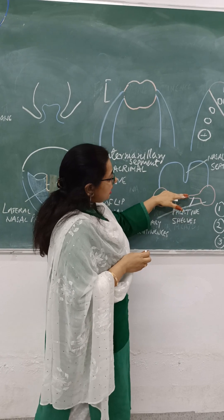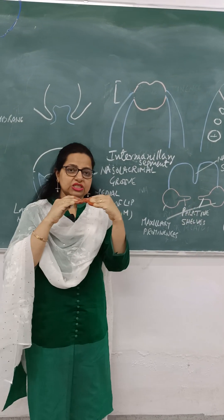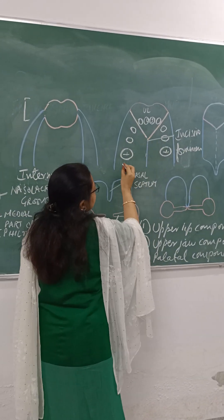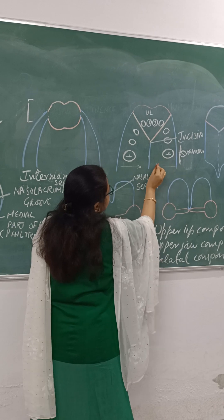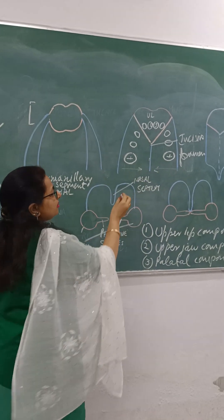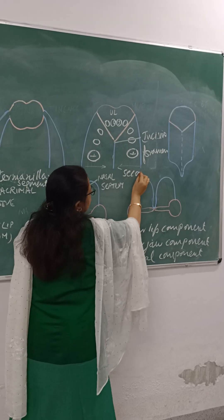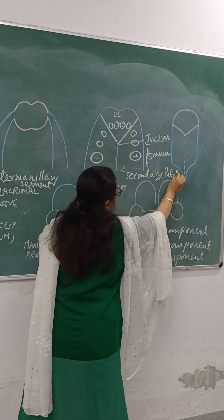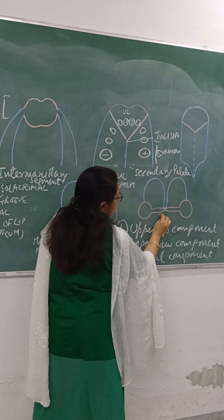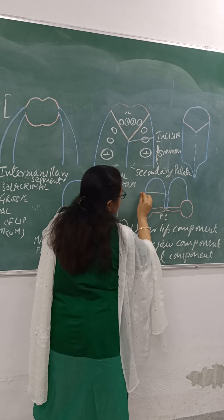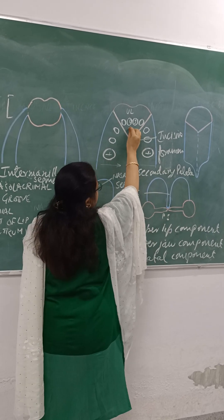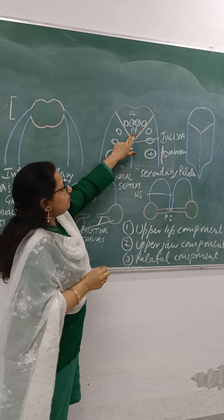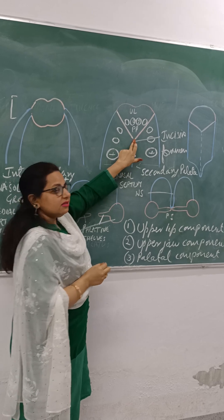When the palatine shelves grow towards each other and fuse in the midline, the secondary palate is formed. The fusion is shown here — these are the palatine shelves and this is the nasal septum. Here you can see the junction of the primary palate with the secondary palate is at the incisive foramen.